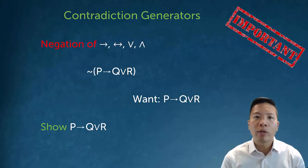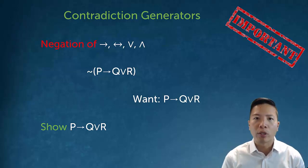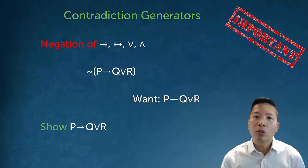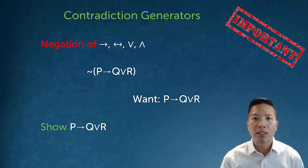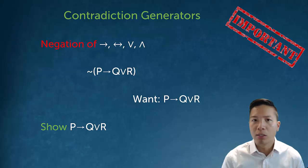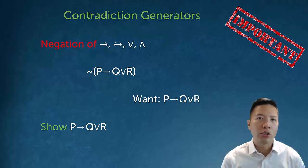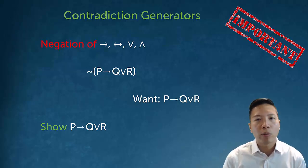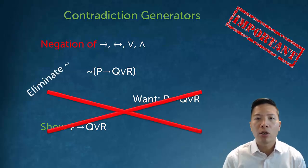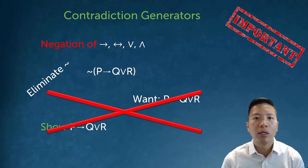Remember that when we were doing our basic proofs using our ten basic rules, contradiction generators were very important. The reason we needed them was because sometimes we'd have the negation of something and couldn't do anything with it — that negation was basically tying the sentence together, and we couldn't access any of the parts. So we needed to show the unnegated form to get a contradiction and do an indirect derivation. It turns out we don't always need to do this, if we had a rule that was essentially like an elimination of negation rule — and that's what our negation rules actually are.